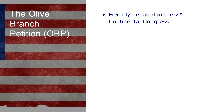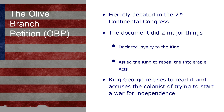Another major event in the Continental Congress was the debate over the Olive Branch Petition — kind of the last-ditch effort to keep peace with Great Britain. It was fiercely debated, but they voted in favor of sending it. The petition told King George they were still loyal but demanded he repeal the Intolerable Acts. King George refused to read it and accused the colonists of trying to start a war for independence. Those who opposed sending it were essentially proven right. He then sent 20,000 more troops to the colonies.